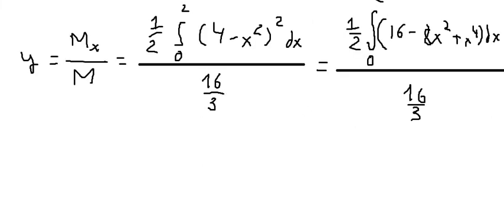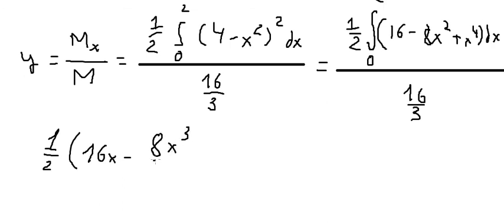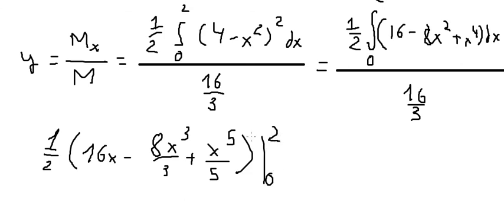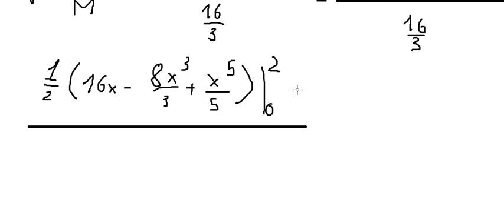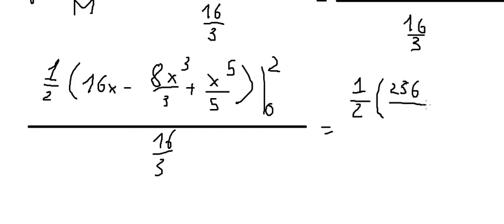Now we integrate term by term: the integral of 16 gives 16x, the integral of 8x squared gives 8x cubed over 3, and the integral of x to the power of 4 gives x to the power of 5 over 5. Evaluating from 0 to 2, multiplied by one-half, gives 256 over 15.